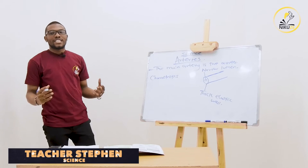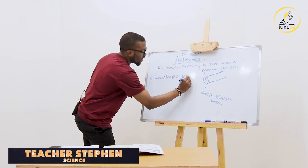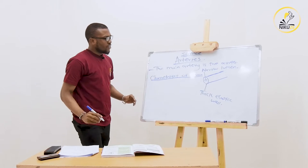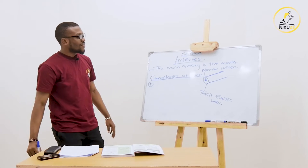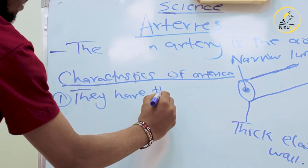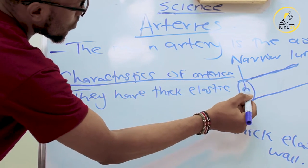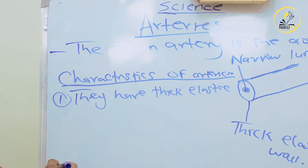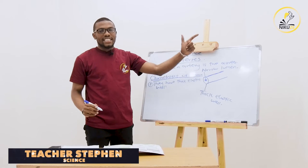Characteristics simply means description - it's like describing something. So the characteristics of arteries: remember arteries are located deep inside the body. The first characteristic is they have a thick elastic wall. It is very thick - the distance from the lumen to the outer wall is very thick.